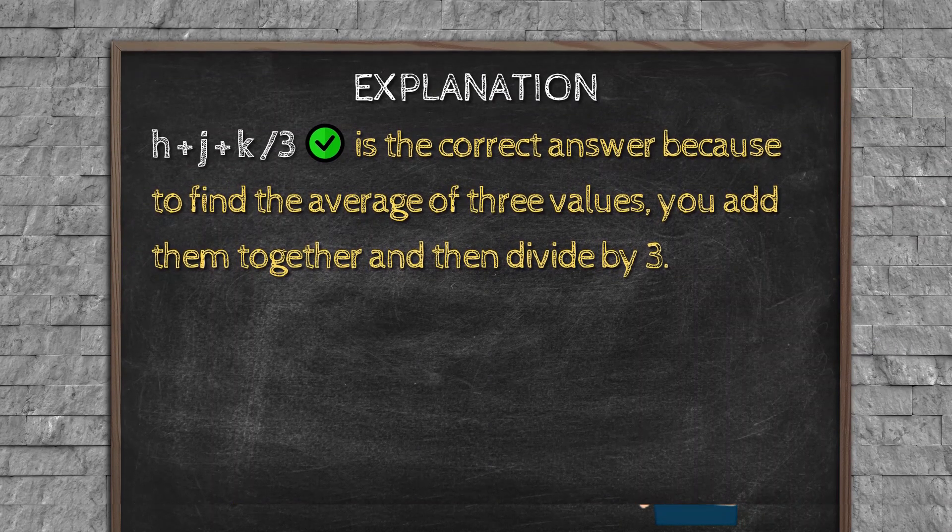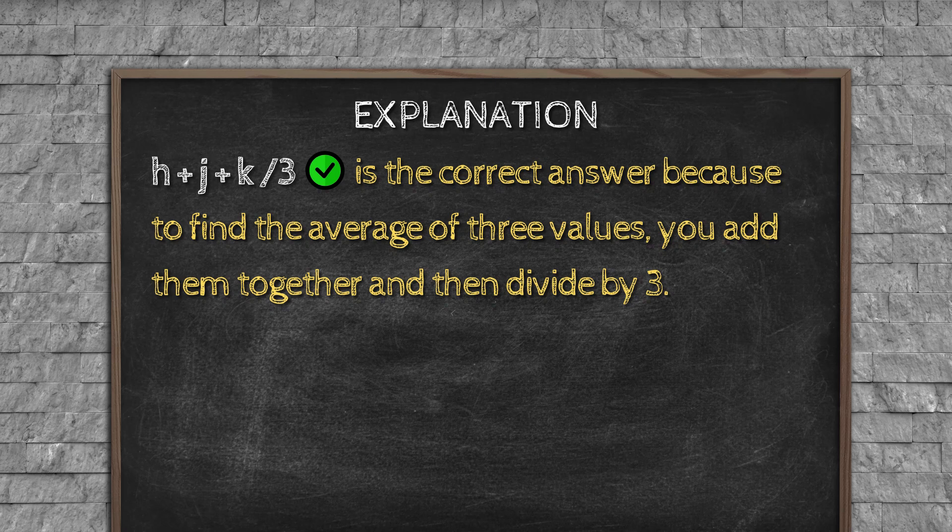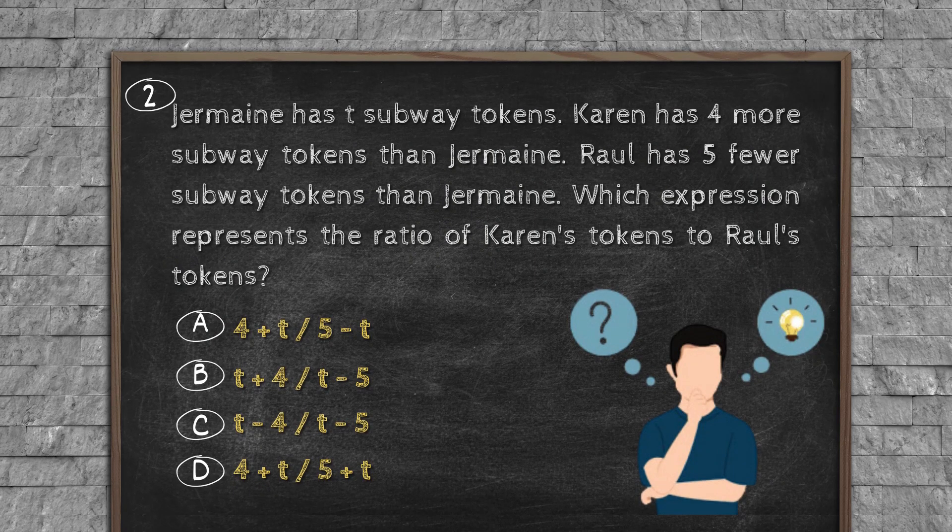Explanation: (H + J + K)/3 is the correct answer. You add them together and then divide by 3.